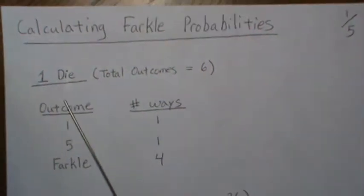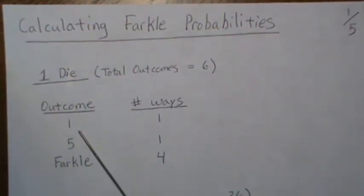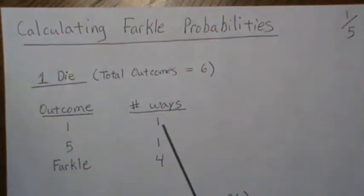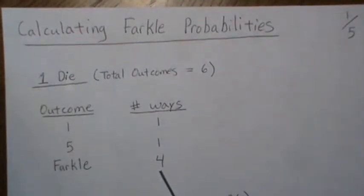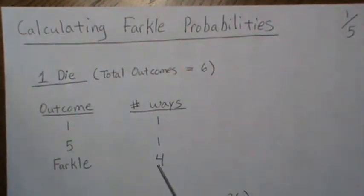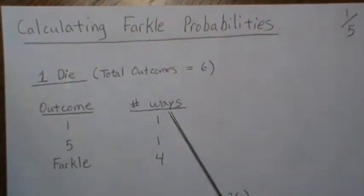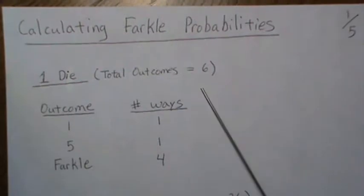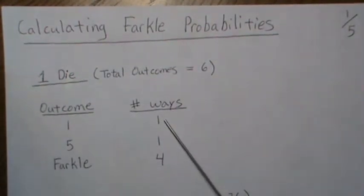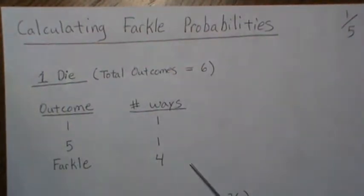So if we have one die in our hand, there are six total outcomes, and you score by rolling a one or a five. There's one way to roll a one and one way to roll a five, and there are four ways to Farkle, meaning you don't score. In the interest of time, we're not going to calculate probabilities — these are just the number of ways. If you want probability, you take the number of ways divided by the number of outcomes: one-sixth, one-sixth, four-sixths.